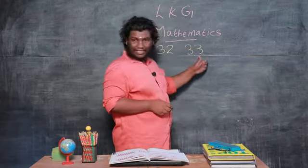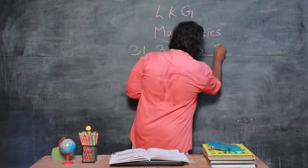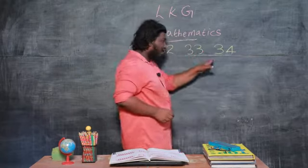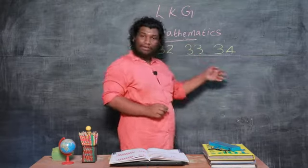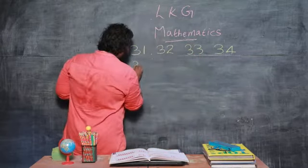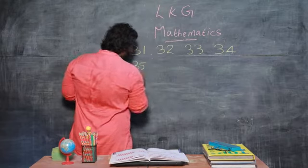This is 33, then 34. 3, then 3, then 4. 33 means 3, then 3. 3 then 4 means 34. 35 means 35. 3, then 5.